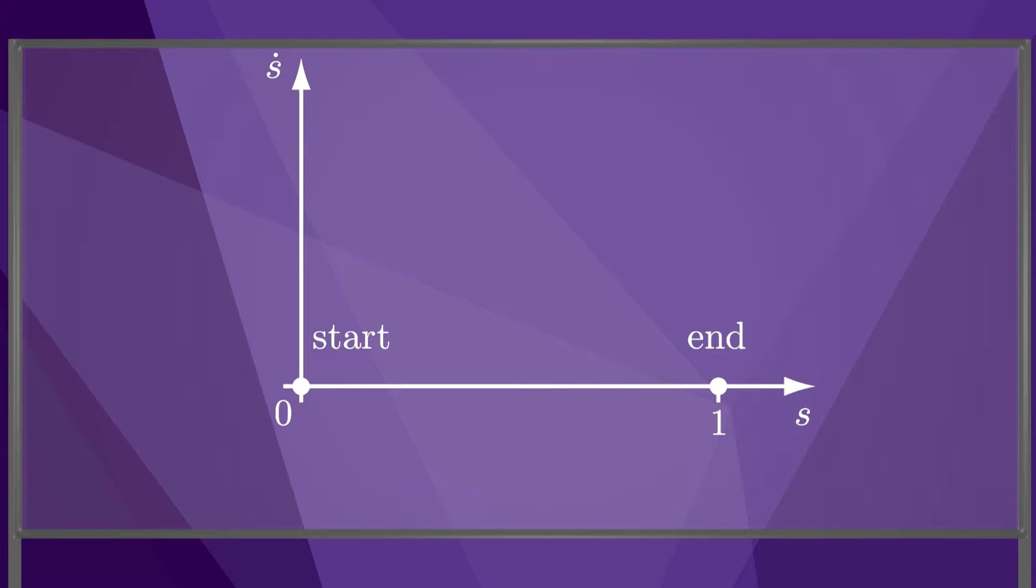Since we require the motion along the path to be monotonic, that is, the robot always moves forward along the path, s dot must always be positive. So we only need to draw the top right quadrant of the s, s dot plane. If the robot moves very slowly along the path, then the motion of the robot is essentially along the s-axis, from the start to the end.